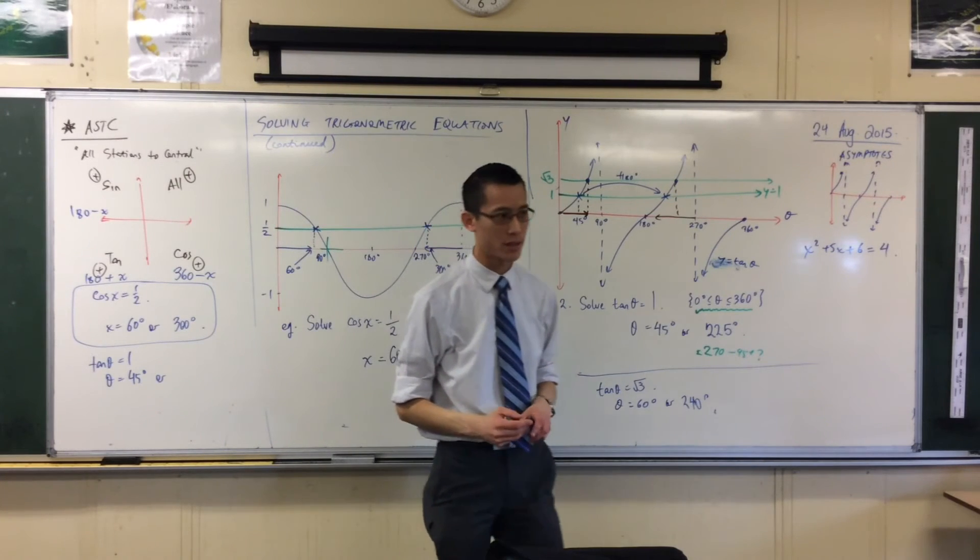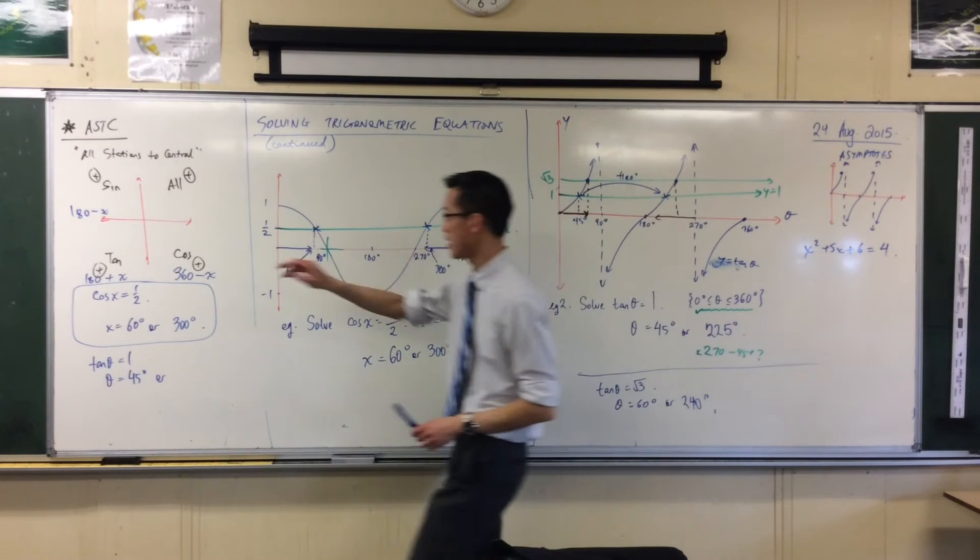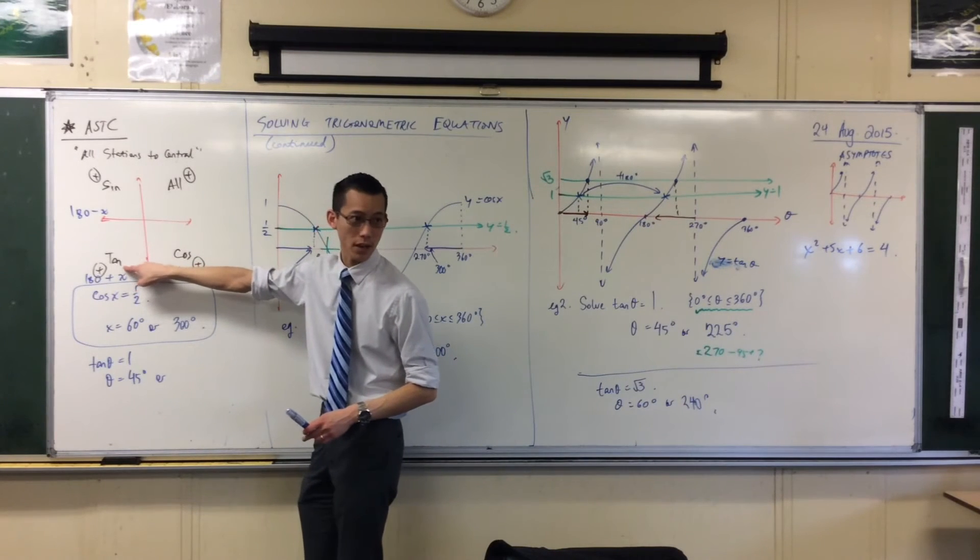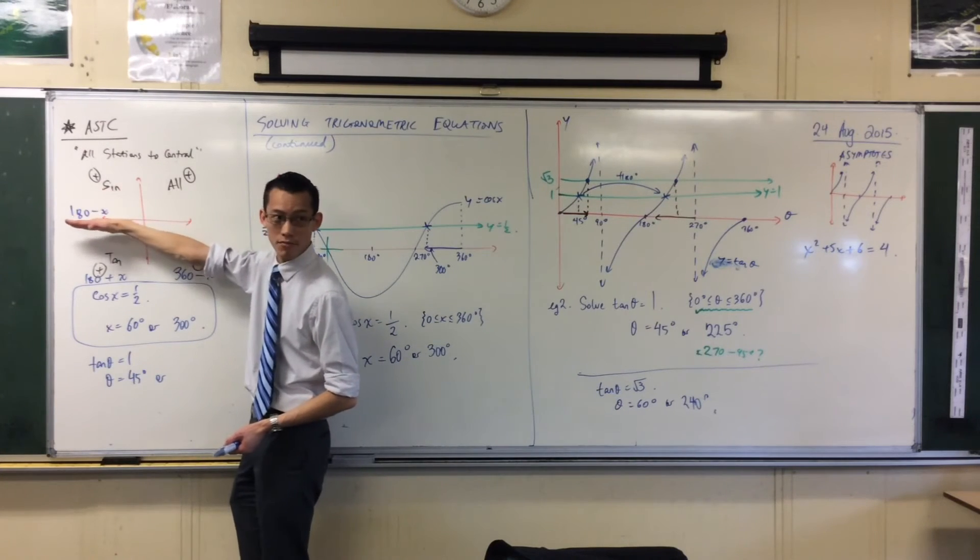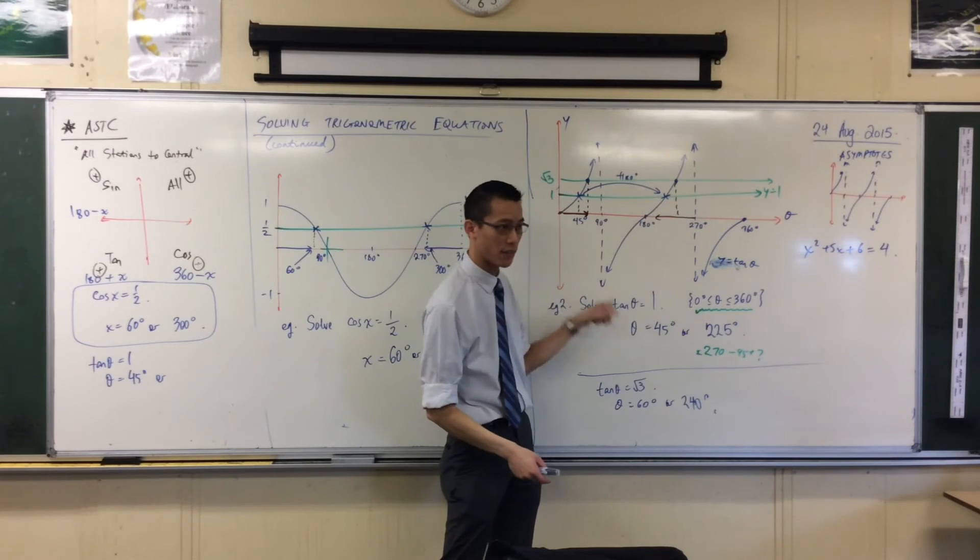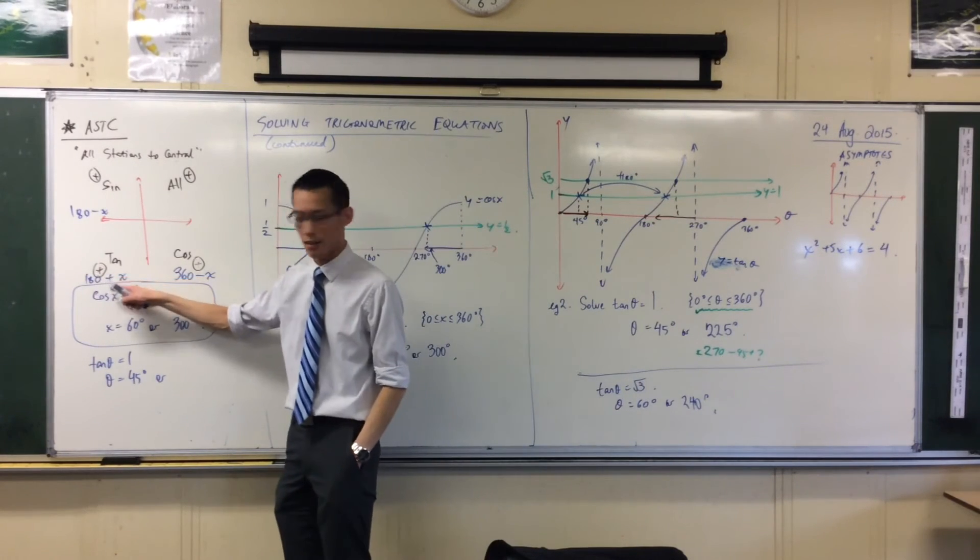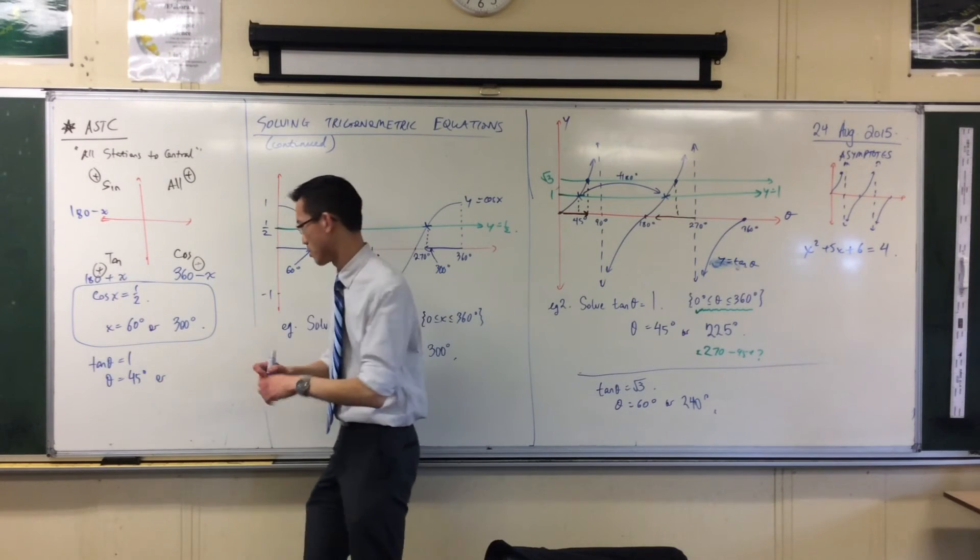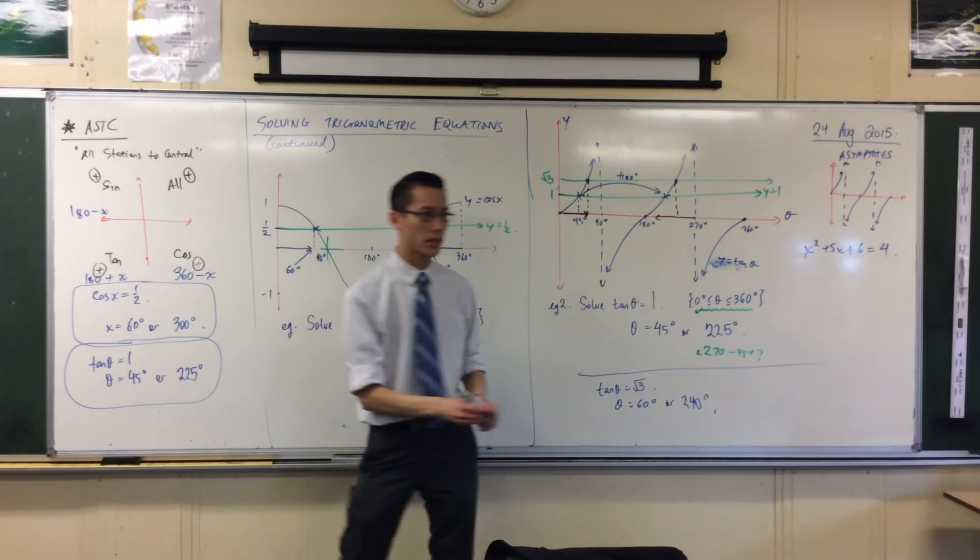And the answer is the third quadrant. There he is. Tan's positive over here. If I were to put in an angle between 90 and 180, tan will give me a negative. You can see, there he is. He's a negative. So what I want is the third quadrant, which is 180 plus whatever my angle was, which is 225. The same answer that I got before.